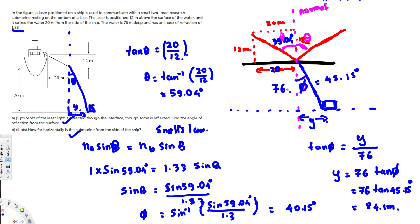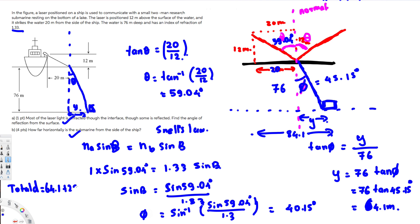This distance of 64.1 meters through the water, plus the initial 20 meters from the ship to the water entry point, gives a total horizontal distance of 64.1 + 20 = 84.1 meters. That is the final answer. Thanks for watching, see you next time.